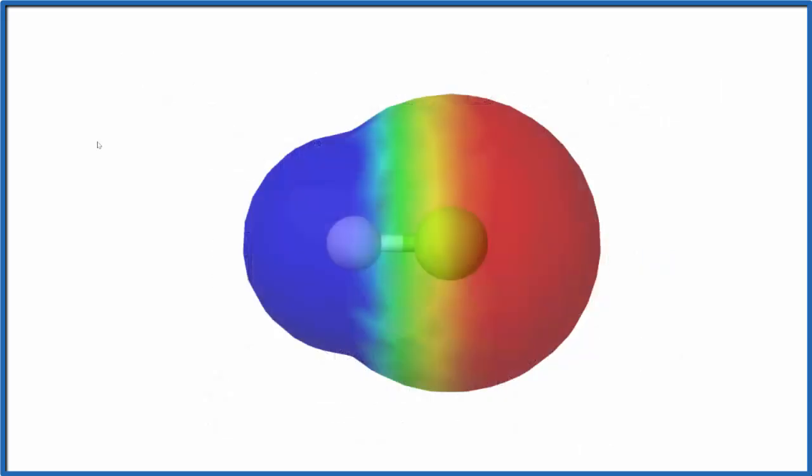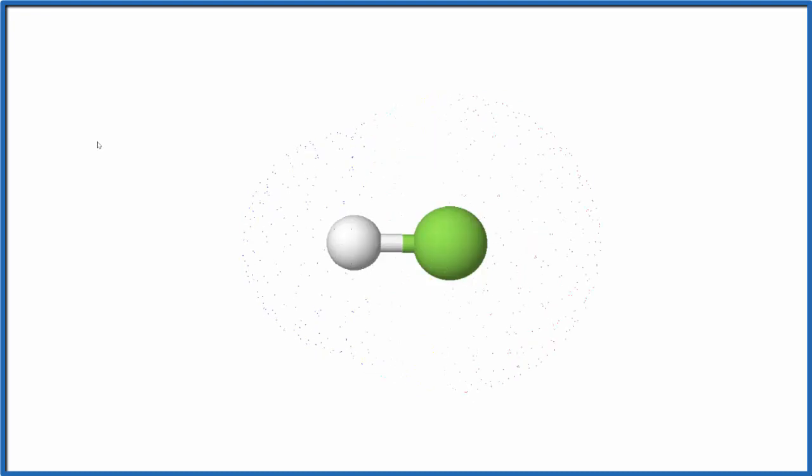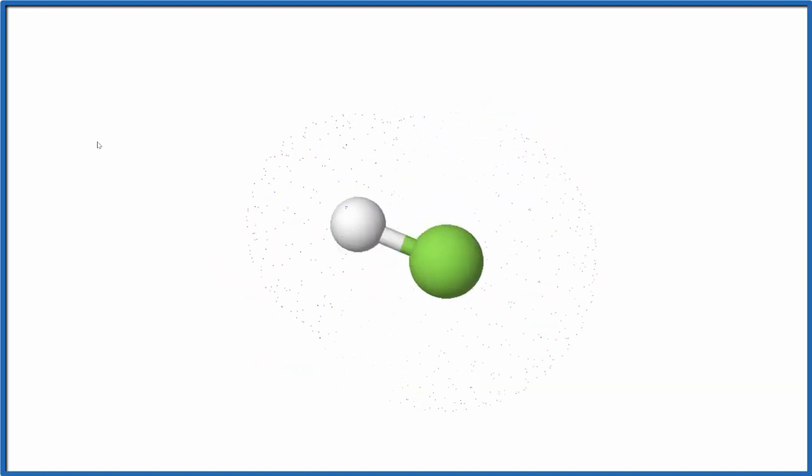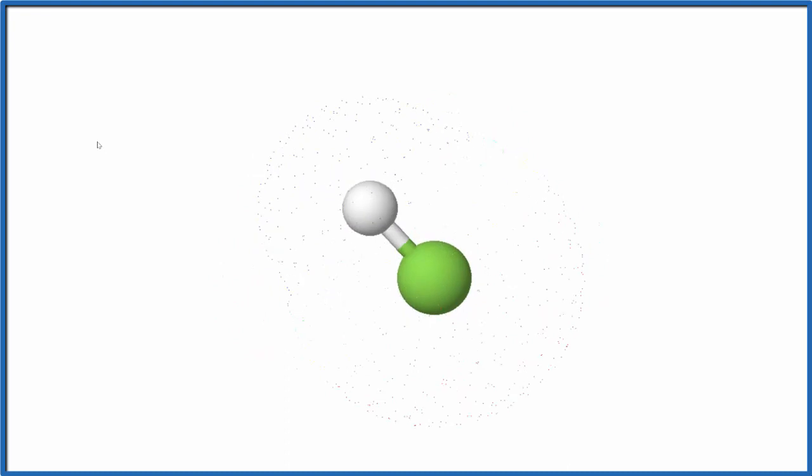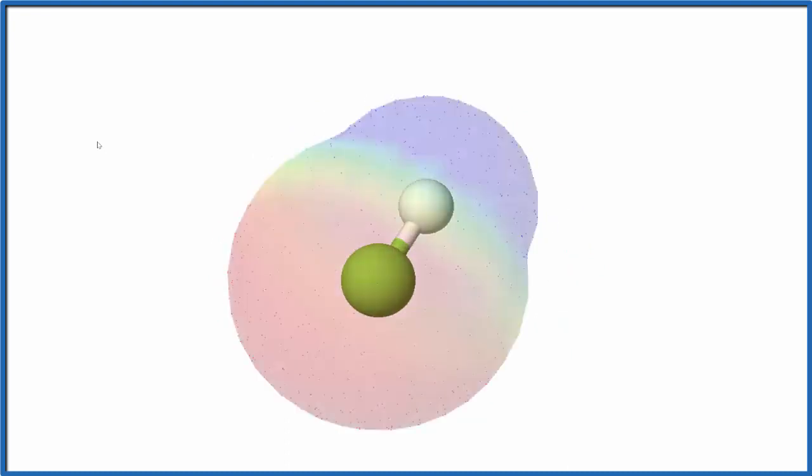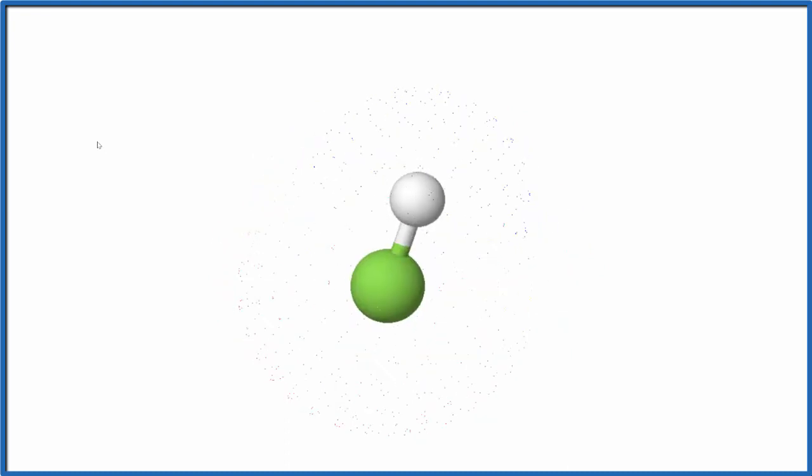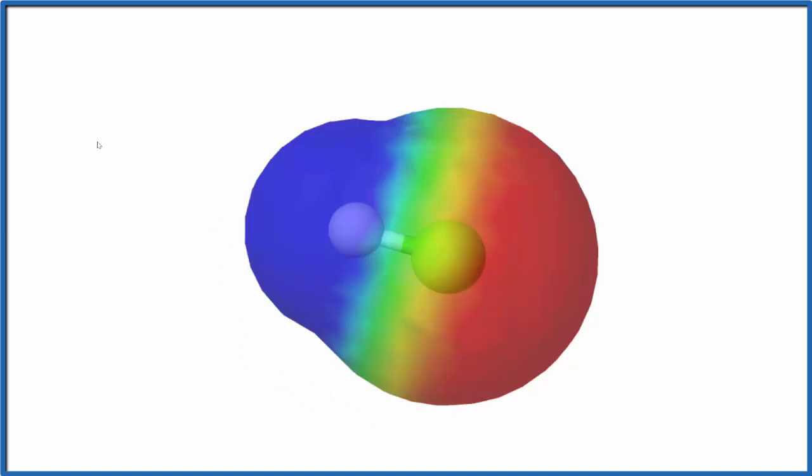The blue area around the hydrogen is more positive; the red around the fluorine is more negative. That's because the electrons in the bond between hydrogen and fluorine spend more time with the more electronegative element—the fluorine. We end up with a polar molecule where we have the positive around the hydrogen and the negative around the fluorine.